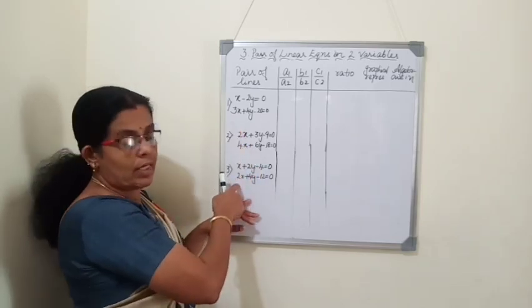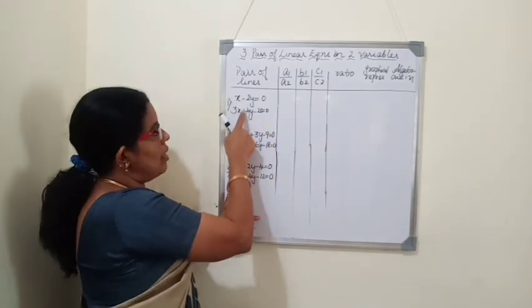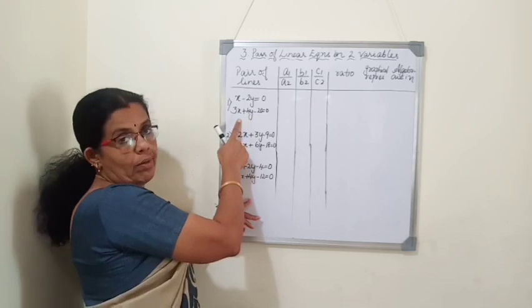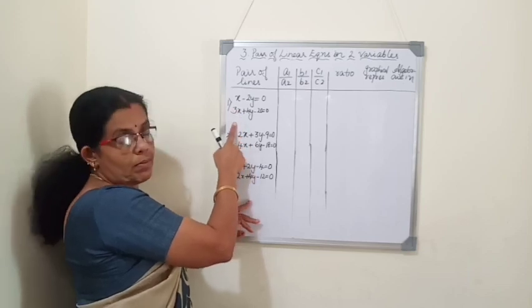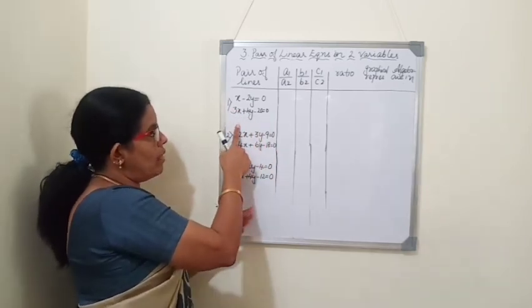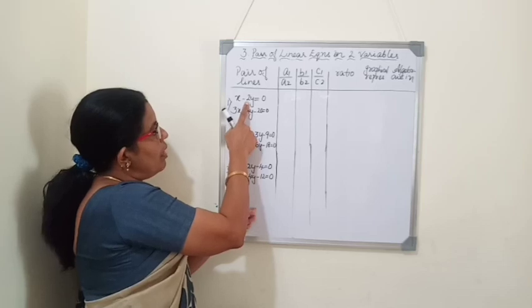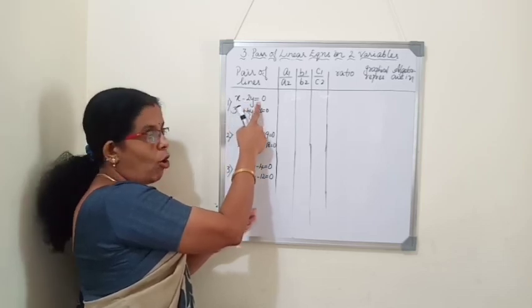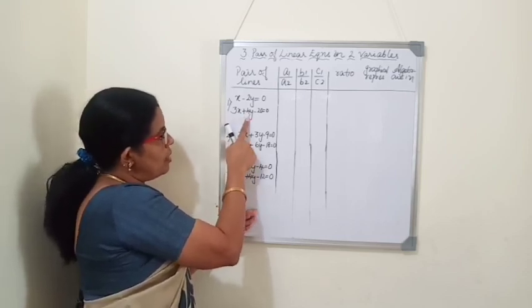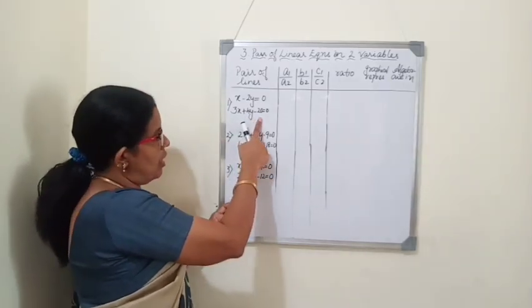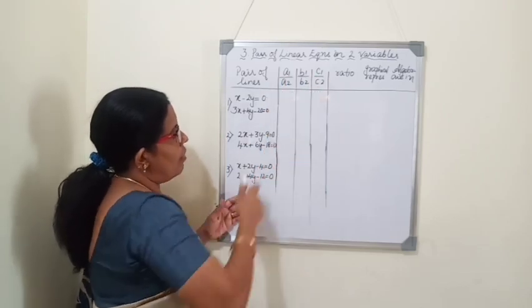I have written three examples here. The first one is x minus 2y equals 0 and 3x plus 4y minus 20 equals 0. These are one pair of linear equations in two variables. The general form is a1x plus b1y plus c1 equals 0 and a2x plus b2y plus c2 equals 0, where a1 is the coefficient of x, b1 is the coefficient of y, and c1 is the constant for the first equation. We have to write the ratio: a1 by a2, b1 by b2, and c1 by c2.